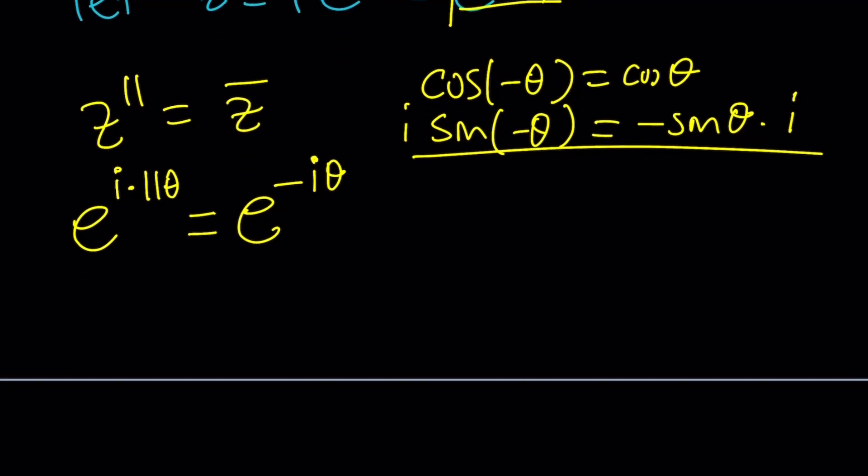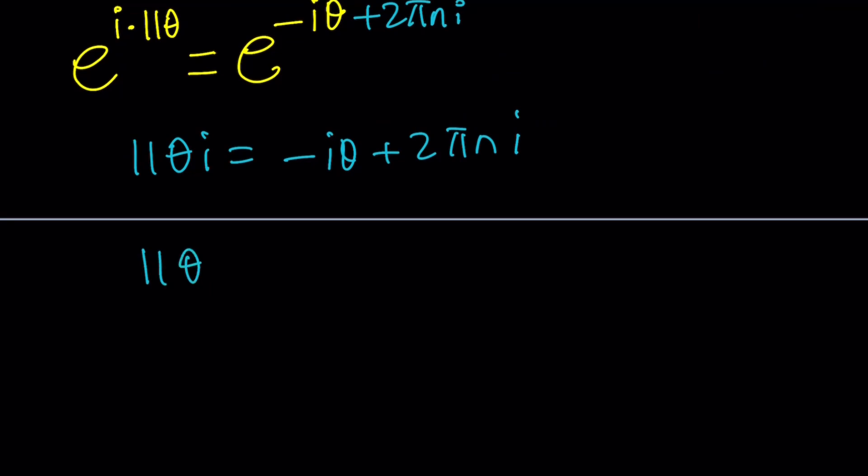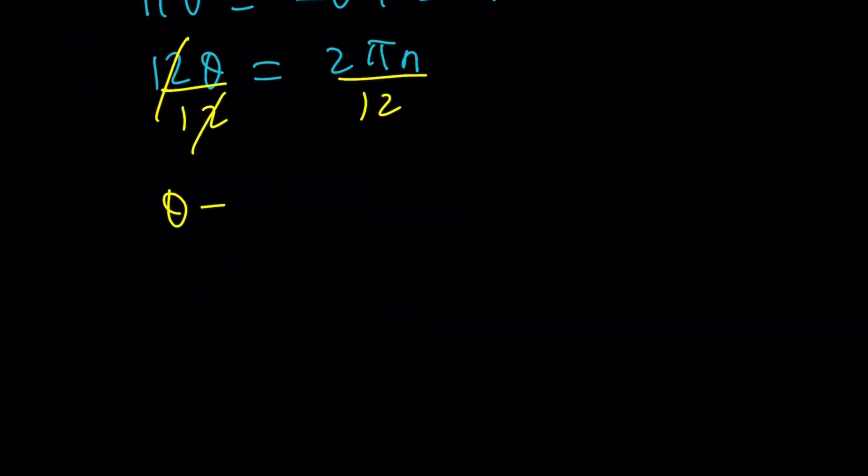Now, here's what we have. The bases are the same. So in other words, we can say that 11 theta is the same as negative theta. Well, wait a minute. We kind of need to add our period, and that's going to be 2 pi n i. That's going to be our period for the exponential. So what we're going to do is we're going to set 11 theta i to negative i theta plus 2 pi n i. Dividing both sides by i is not going to hurt anything. 11 theta equals negative theta plus 2 pi n. Adding theta to both sides, 12 theta is 2 pi n. Divide both sides by 12 and simplify. You're going to get theta equals pi n over 6. n is an integer. And actually, you can use n equals 1 through 12 or 0 through 11. Doesn't matter. I'm going to use 1 through 12.